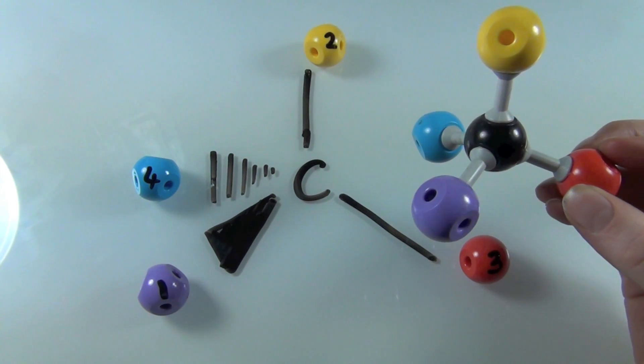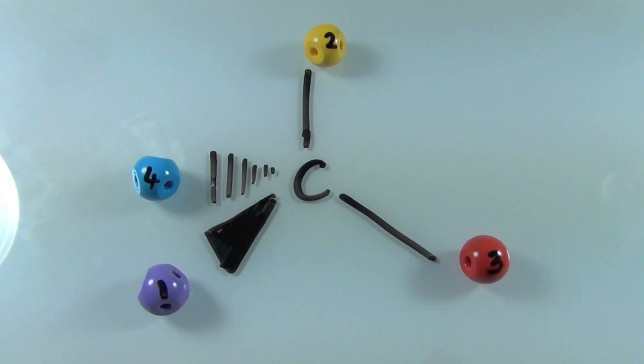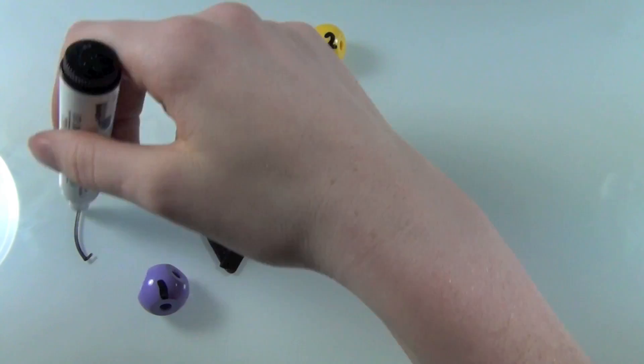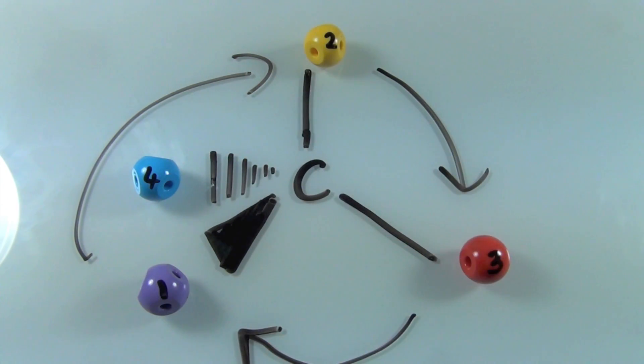And the thing is that when the least important group, group number four, is already in the position facing away from you, then it's pretty much happy days. You just join up the numbers and you assign the configuration.